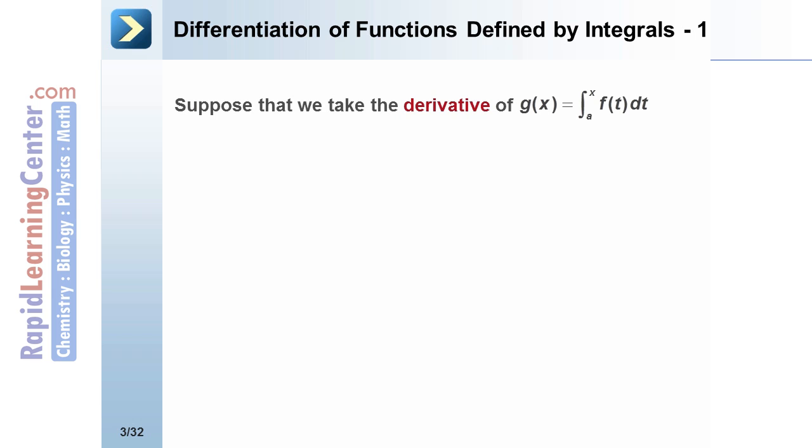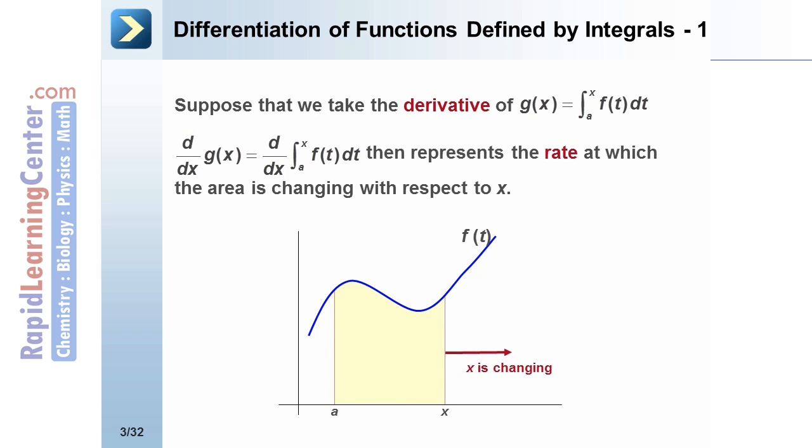Suppose that we take the derivative of g of x, which equals the integral from a to x of f of t. The derivative of g of x is equal to the derivative of the integral from a to x of f of t. This represents the rate at which the area is changing with respect to x.